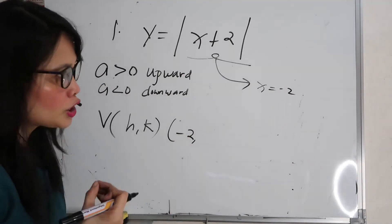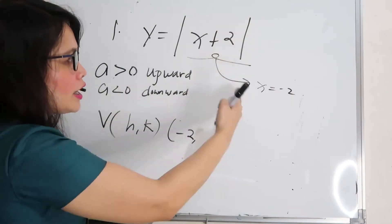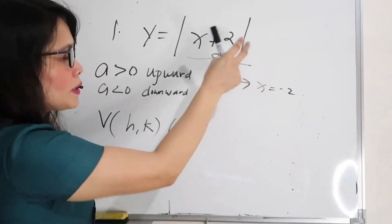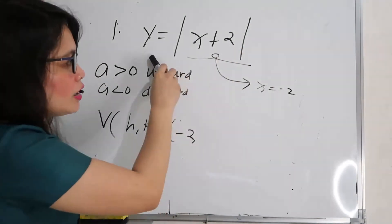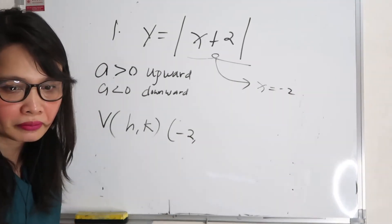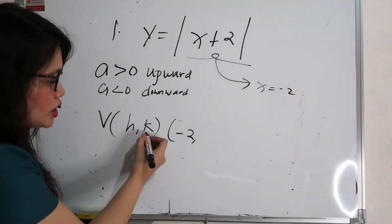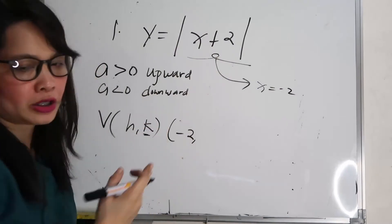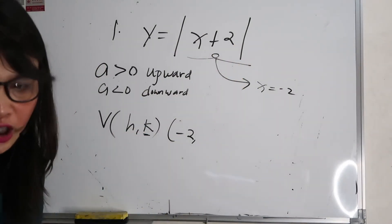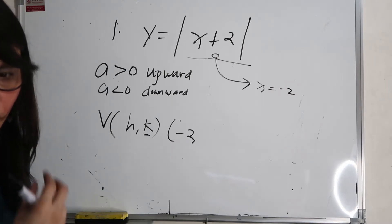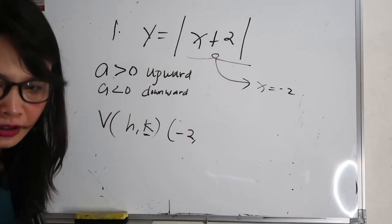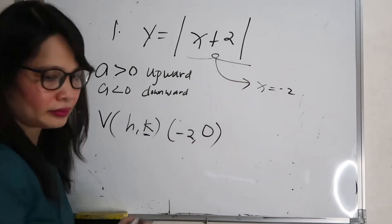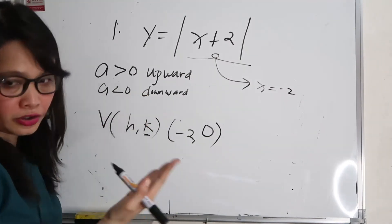For k, it is the constant outside the absolute value expression. In this particular function, there is no constant outside, so k equals 0. Therefore, the vertex is at (negative 2, 0). We can plot that point on the graph.